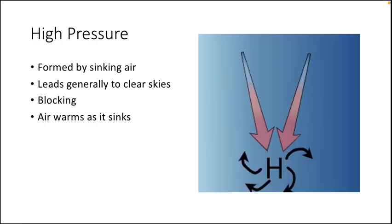Now I'll talk about high pressure and low pressure systems. High pressure is formed by sinking air sinking from high above, and generally leads to clear skies as the air suppresses cloud development as it sinks. The air warms as it sinks, and high pressure also leads to blocking, which is when one weather pattern gets stuck in the same way for a very long time — possibly even up to months in the most extreme cases, but generally around two weeks is normal. This is a diagram of how high pressure forms: the air is sinking from above, it's warming, and then the air at the surface is diverging or spreading out, and that's high pressure.